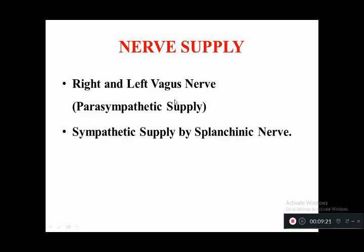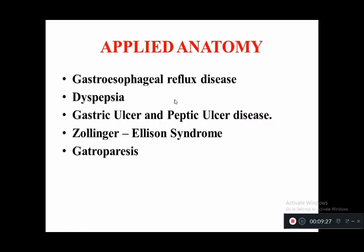Applied anatomy of the stomach includes: gastroesophageal reflux, which is the backward flow of gastric content when the gastroesophageal sphincter is loose — this commonly occurs during sleep; dyspepsia, which is difficulty in digestion; gastric ulcer; Zollinger-Ellison syndrome; and gastroparesis, where the peristalsis movement of the stomach is affected.